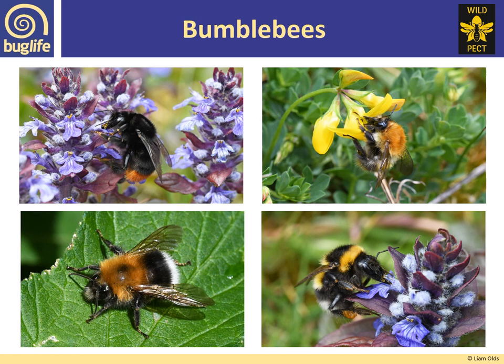They've got different colours — they might have some yellow bands on them, or they might have different colour bottoms as well. On the top left we've got our red-tailed bumblebee, a really nice easy one to look out for — it's all black with a red tip to its bottom. Other bees are all ginger, so this is our common carder bee in the top right. On the bottom left we've got another one that's ginger, with a ginger thorax — the middle part of the body — then black, and then a white bottom. And then we've got our garden bumblebee on the bottom right, which is a black bee with a white bottom and three yellow bands. So when you next spot a bumblebee, see if you can count its bands and check if the tip of its bottom is a different colour.